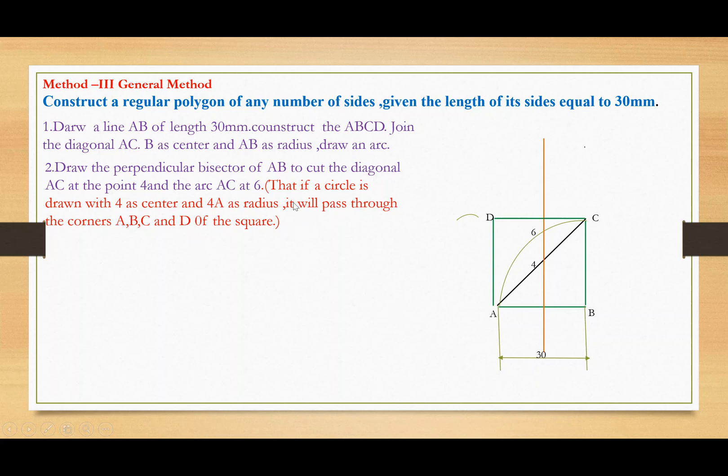If a circle is drawn with 4 as center and 4A as radius, it will pass through the corners A, B, C, and D of the square. Draw a circle with 4 as center and 4A as radius touching the square.